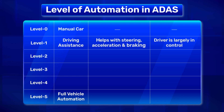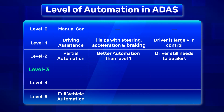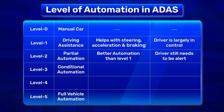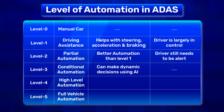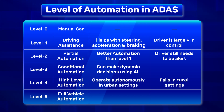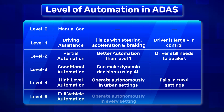Level 2 is partial automation — a better version of level 1, but the driver still needs to be alert. Level 3 is a conditional automation system where vehicles can make dynamic decisions using AI. Level 4 is high-level automation where vehicles can operate autonomously in urban settings. Level 5 is full automation, where the vehicle operates autonomously in every environment.